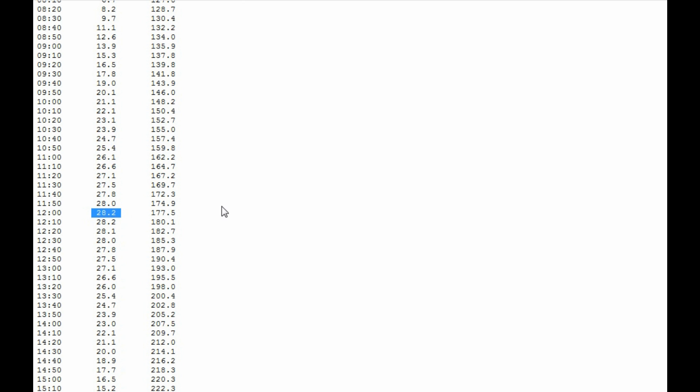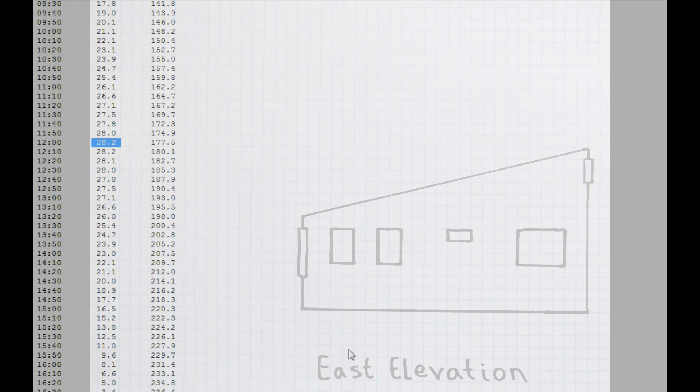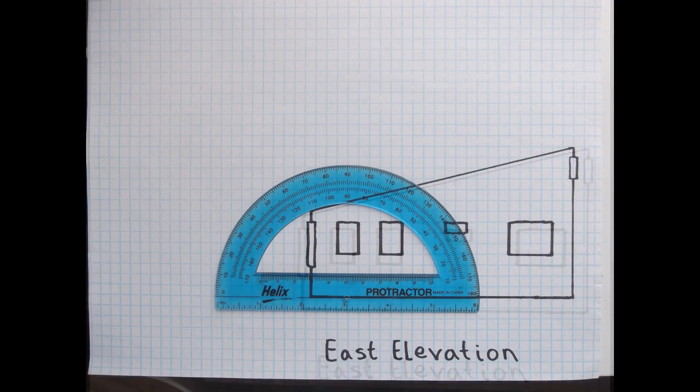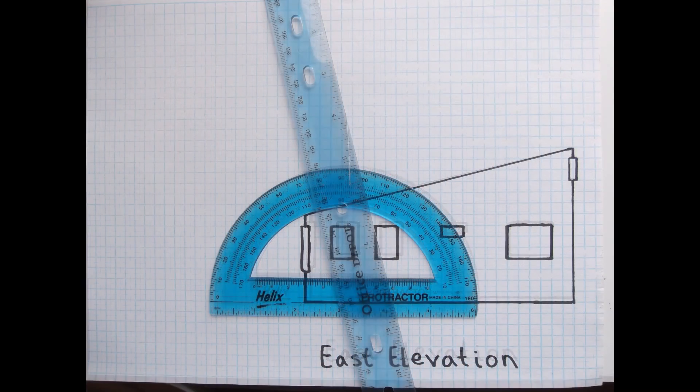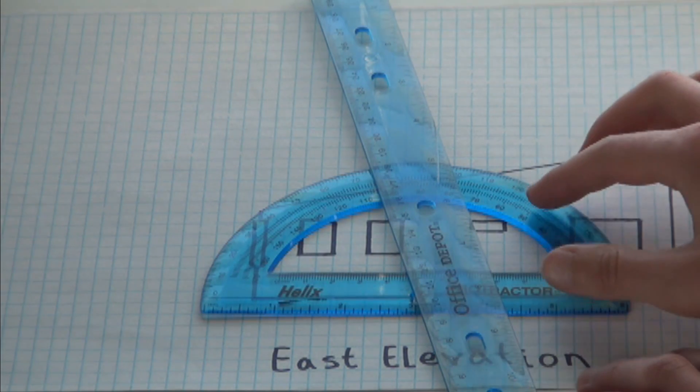Now that we've checked our math and found that it was correct, let's draw the winter and summer sun angles on the east elevation of our model solar home plans. Line up your protractor on the bottom of your house.